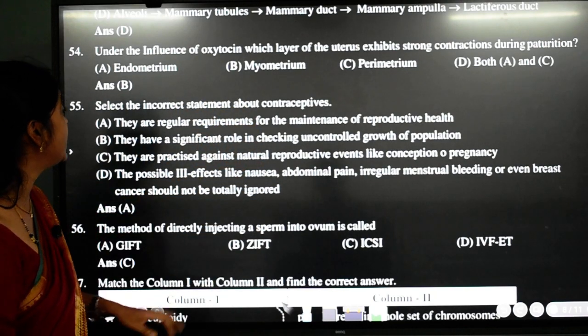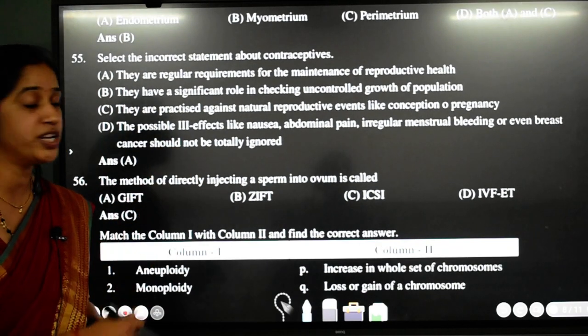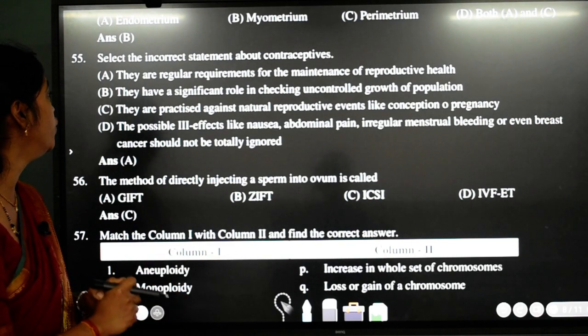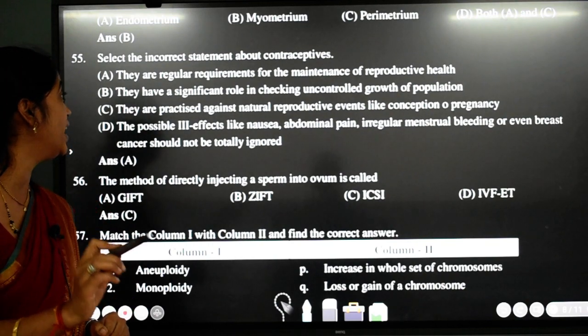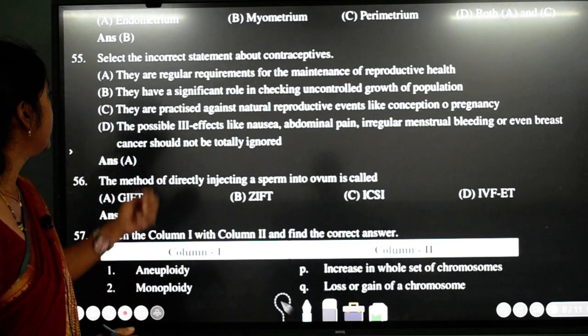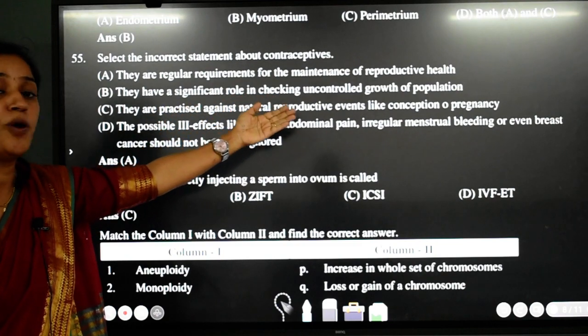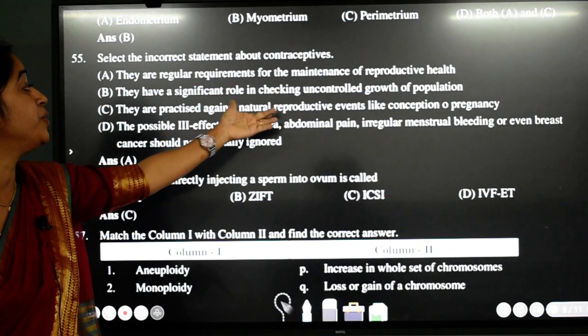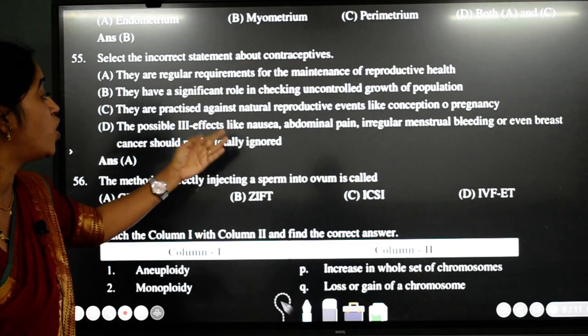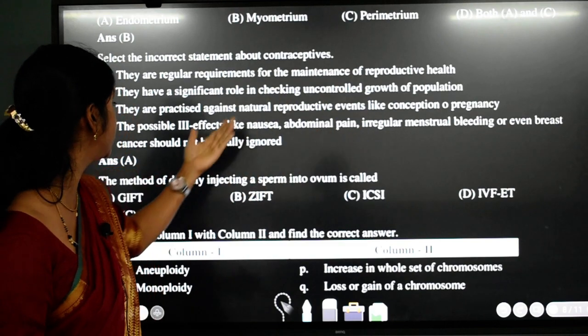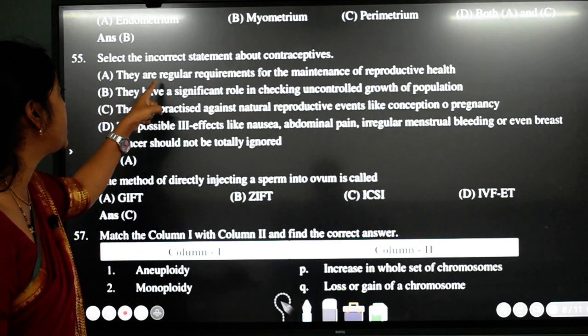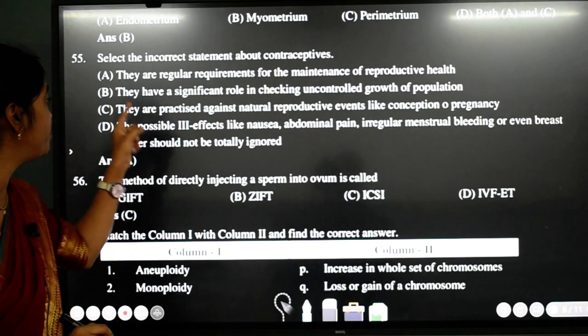55th question. Select the incorrect statement about the contraceptives. Here we have to check for the contraceptives. A. They are regular requirement for the maintenance of reproductive health. No students straight away in your NCERT. They have given the statement there that they are not the requirement. So first statement itself is wrong. They have a significant role in checking uncontrolled growth of population. Correct. They are practiced against the natural reproductive event like contraception or pregnancy. Correct. The possible side effects like nausea, abdominal pain, irregular menstrual bleeding or even breast cancer should not be totally ignored. All these statements are given in the NCERT. But first statement here they have mentioned not. So answer is A.